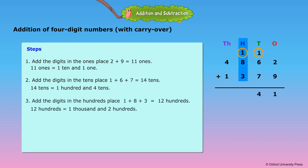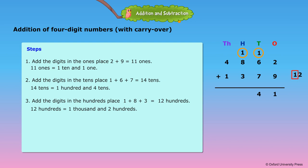Step 3: Add the digits in the 100's place. 1 plus 8 plus 3 is equal to 12 hundreds. 12 hundreds equals 1 thousand and 2 hundreds. Put 2 hundreds under the 100's column and carry over 1 thousand to the 1000's column.